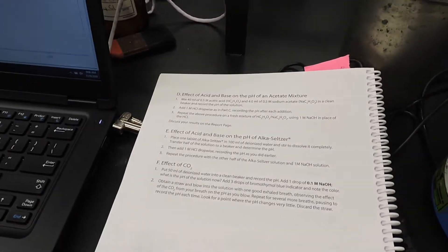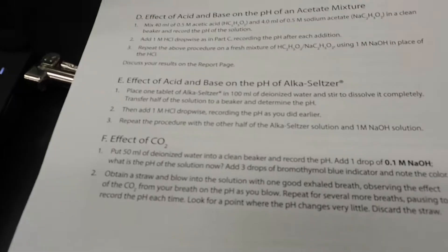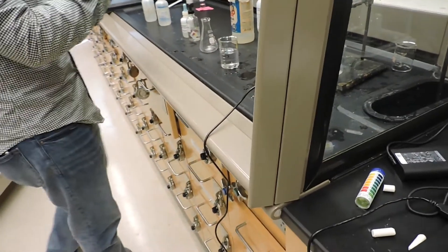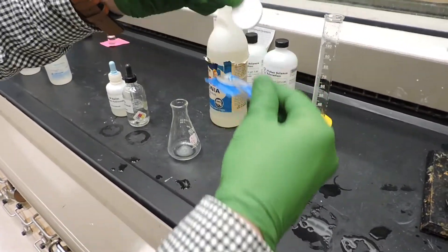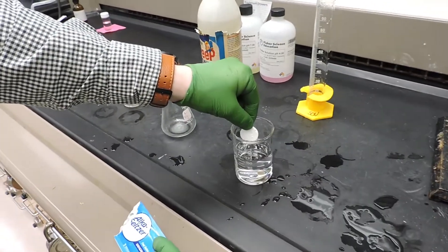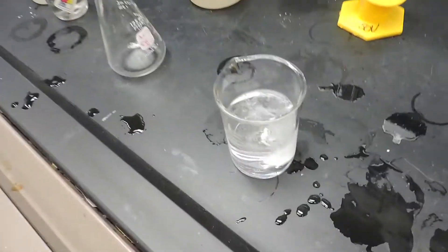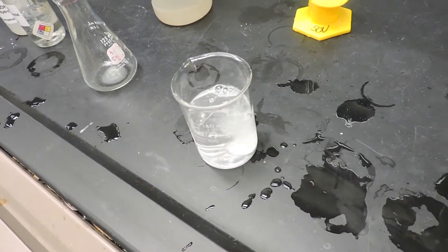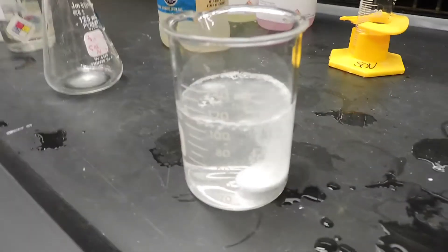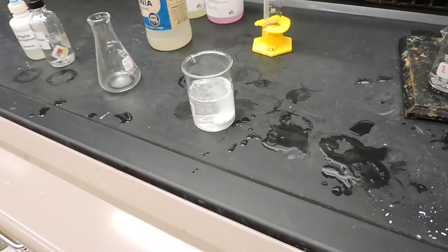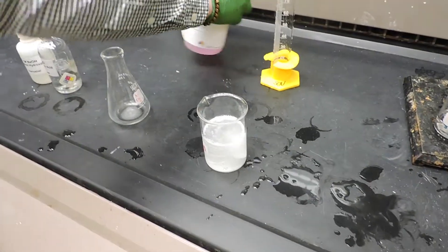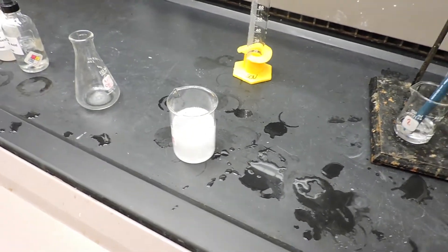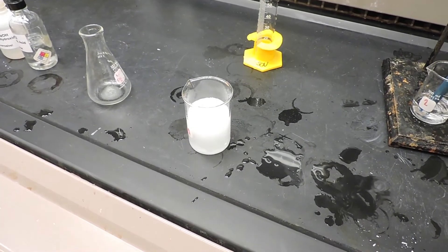Now we are on Part E, the effect of acid or base on the pH of Alka-Seltzer. We are first going to place one tablet of Alka-Seltzer into 100ml of DI water and dissolve it completely. Once this is done, we will transfer half of the solution, 50ml, into a beaker and then we will determine the pH of that solution.